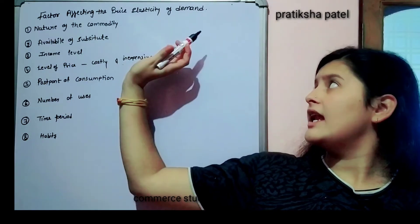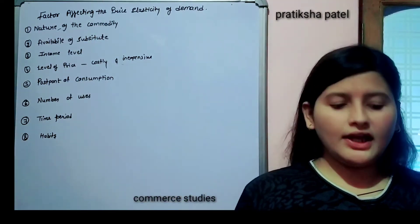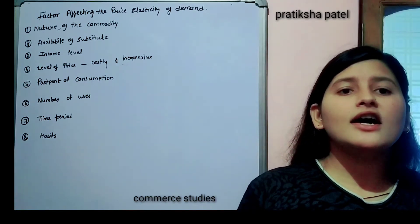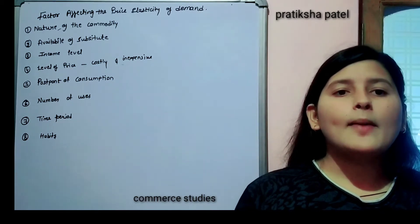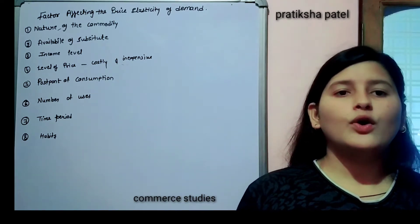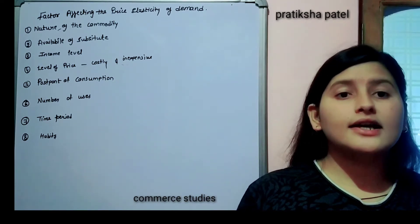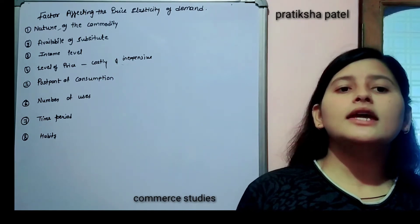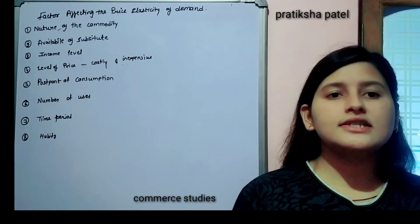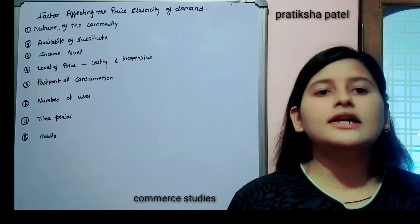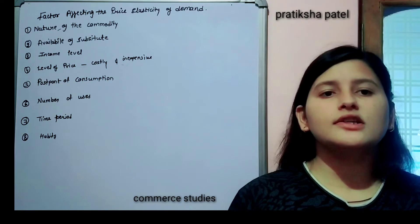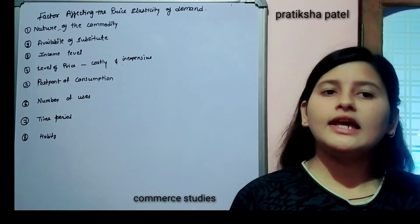The first factor affecting the elasticity of demand is the nature of the commodity. Nature of the commodity means what is the nature of any commodity? Whether that commodity deals with our necessities of life, whether those commodities are comfort commodities, or whether those commodities are luxurious commodities. The elasticity of demand depends on this. Friends, let me clarify once more. The word elasticity means flexibility, meaning something that adopts changes quickly.